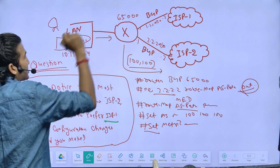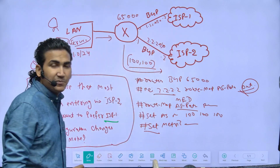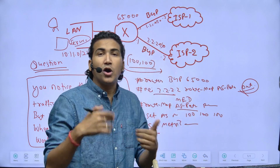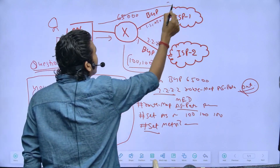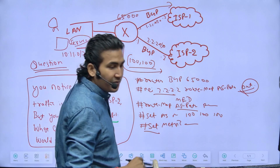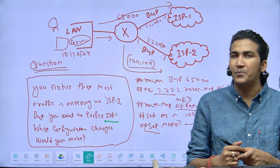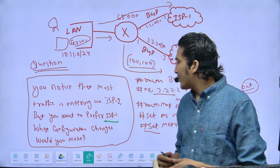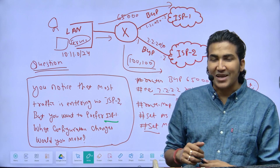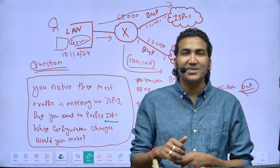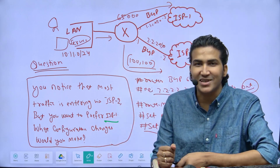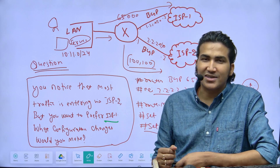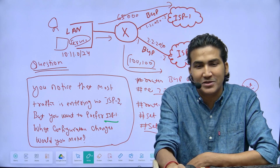Similarly, if a LAN user is forwarding traffic to outside and it is going via ISP 1 or ISP 2 but you want to prefer ISP 1, this is outbound traffic. Which attribute would you use to manipulate the path in that case? Let me know in the comment section. If you learned something, please hit like, subscribe if you're new, and post any questions in the comments. Thank you for watching.